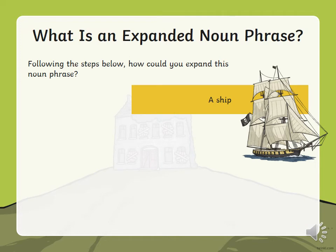Following the steps below, how could you expand this noun phrase? There are three steps. What's the first step? You add another noun to the noun phrase — our noun phrase is a ship. What's the second step? You need to add adjectives. And the third step? You need to add a prepositional phrase. Pause the video and have a go — you've got a minute to turn this boring noun phrase, a ship, into a very interesting, fun sentence.